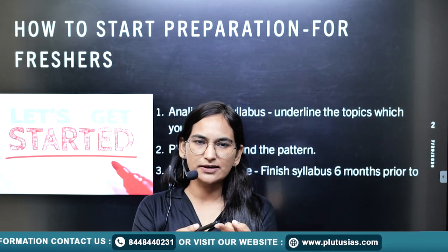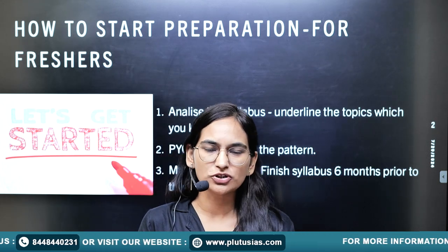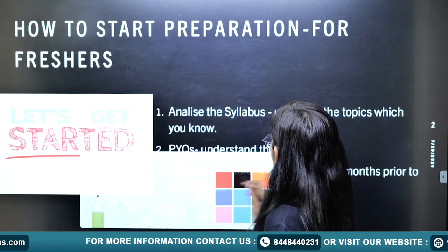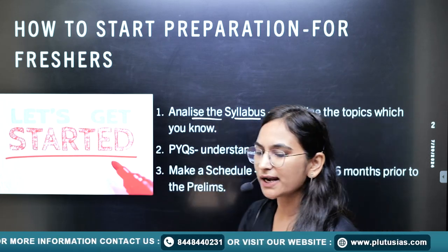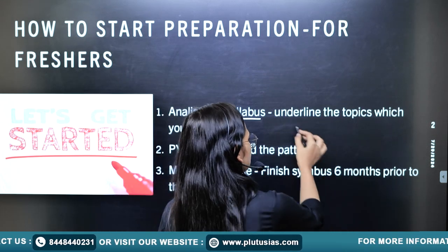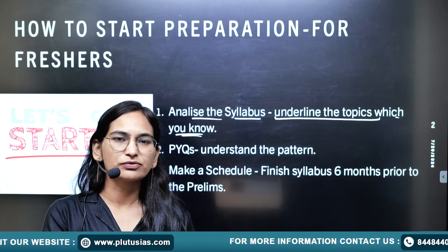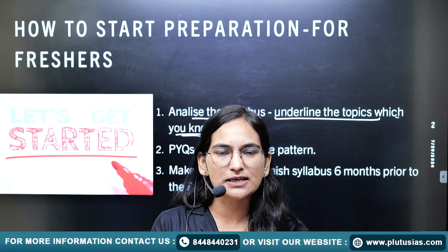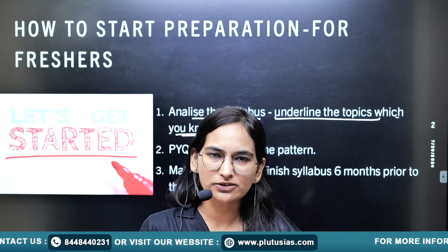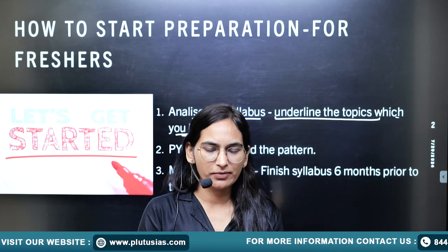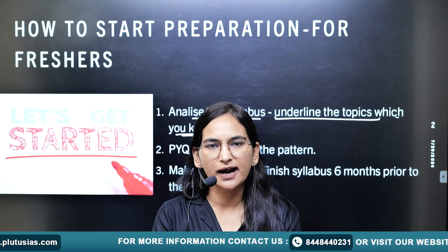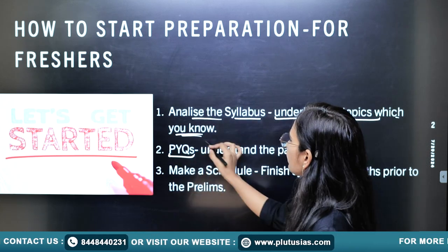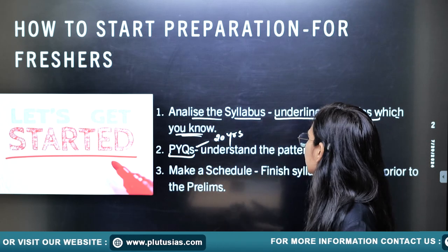Here is how to get started. There are two navigators: one is the syllabus, and another is your PYQs — Previous Year Questions. First, analyze your syllabus properly. While analyzing, underline the topics you know. There must be some familiar topics because if you are selecting maths optional, I would assume you have some basics in mathematics — be it up to 12th standard, masters, or engineering background. Finalize these familiar topics.